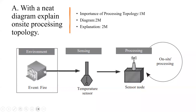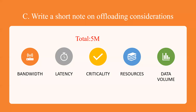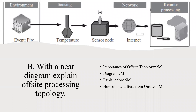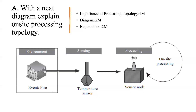For 'explain on-site processing topology with a neat diagram' — this follows the same structure as off-site processing topology. Write the importance of the processing topology, draw the diagram, and give the explanation. However, here you have only five marks weightage, so shorten your answer compared to the 10-mark off-site question.